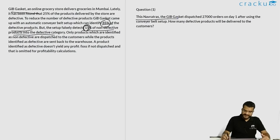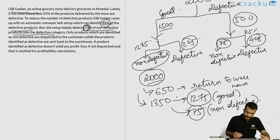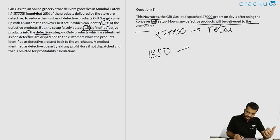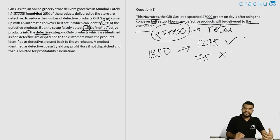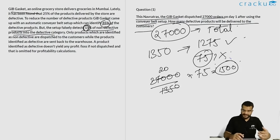On Navaratras, GIB dispatched 27,000 orders on day one. Using the conveyor belt setup, how many defective products will be delivered? From our calculation, out of every 1350 delivered, 75 are defective. So if 27,000 are delivered: 27,000 / 1350 × 75 = 20 × 75 = 1500 defective products. The correct answer is 1500.